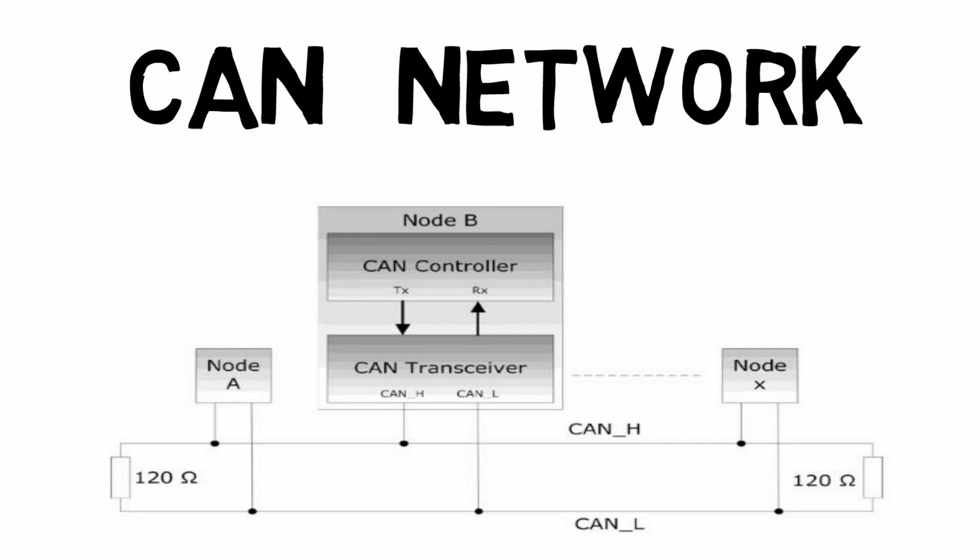Here the actual CAN signal flows. The node is the ECU, and the ECU will have other software components and hardware components. This is the whole physical outlook of the CAN network.